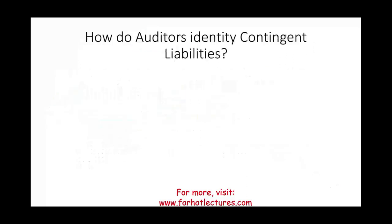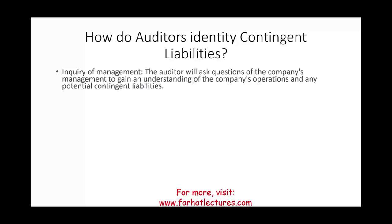From an auditor's perspective — because everything discussed so far you would learn in a financial accounting course — the question is: how do auditors identify contingent liabilities? The first thing is you ask management — inquiry of management. The auditor asks questions of the company's management to gain an understanding of the company's operations and any potential contingent liabilities.